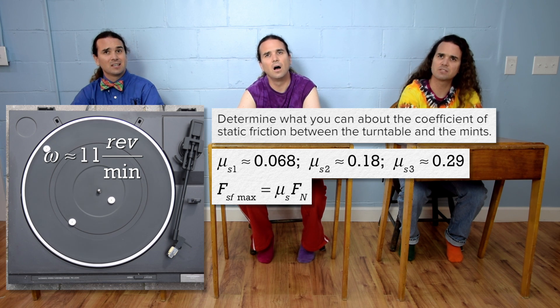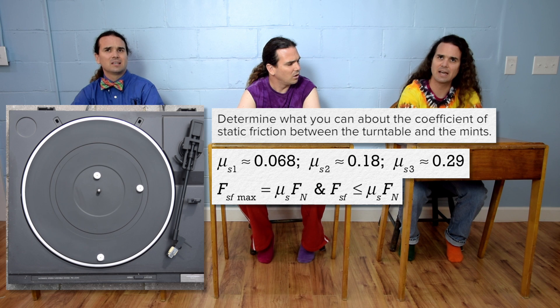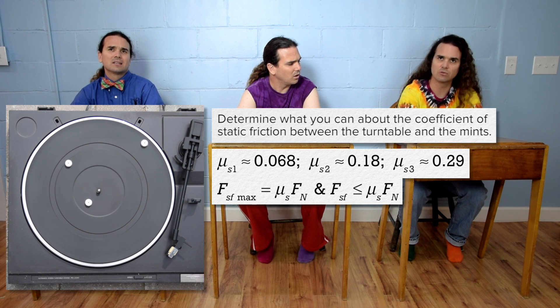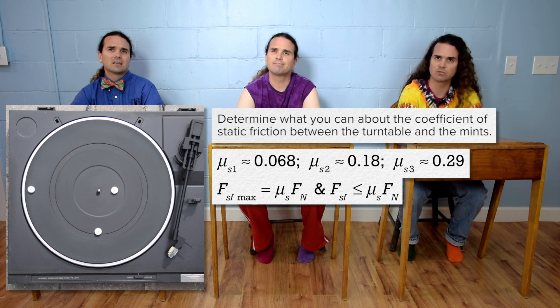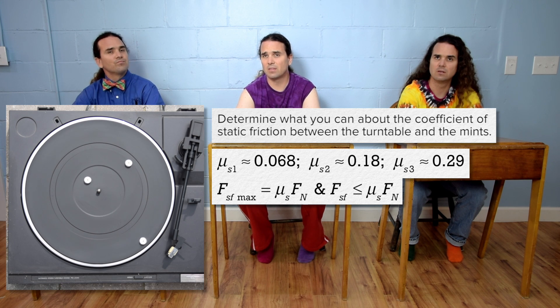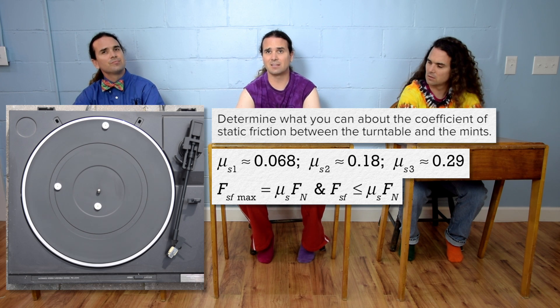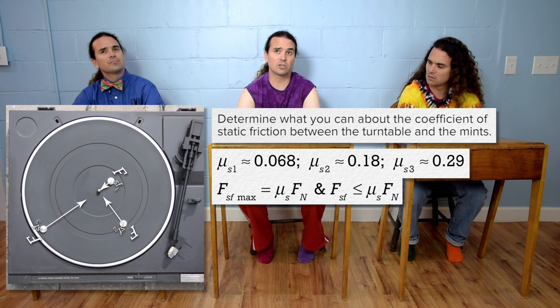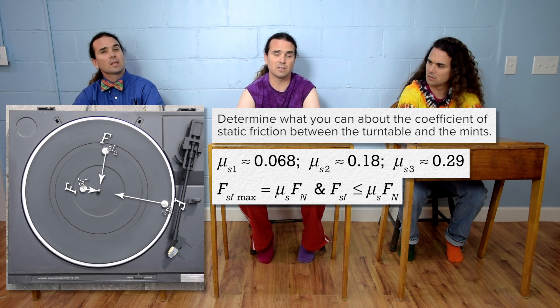Does this have to do with the fact that we used the maximum force of static friction in our equations? Right, the force of static friction is actually less than or equal to the coefficient of static friction times force normal. Okay, so then the force of static friction acting on each mint is larger when the radius of the circle is larger.